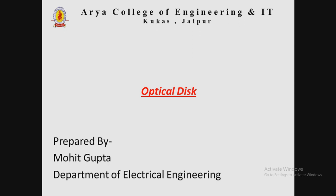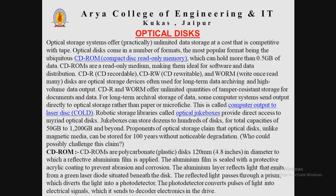We are going to begin with the remaining topic of chapter 3, that is optical disk. Optical disk storage systems offer unlimited data storage at a cost that is competitive with tape. It comes in a number of formats, and the most popular format being ubiquitous is the CD-ROM, also known as compact disc read-only memory, which can hold more than 0.5 GB of data. These are read-only media, making them ideal for software and data distribution. CDR, known as CD recordable, and CDRW, known as CD rewritable, and WORM, that is write-once read-many disks, are optical storage devices often used for long-term data archiving and high-volume data output.